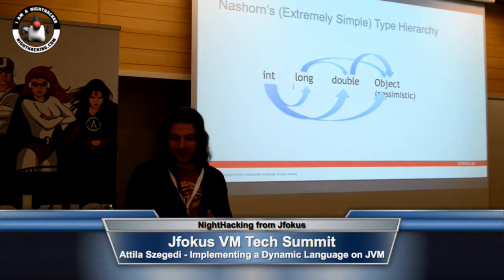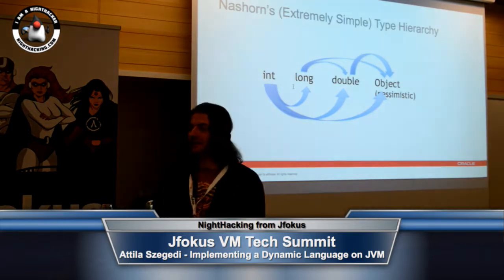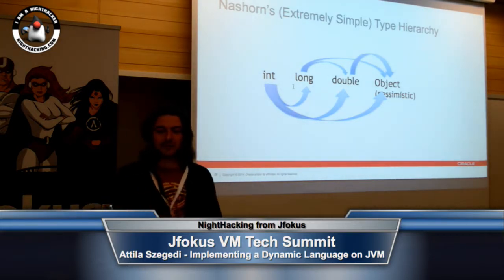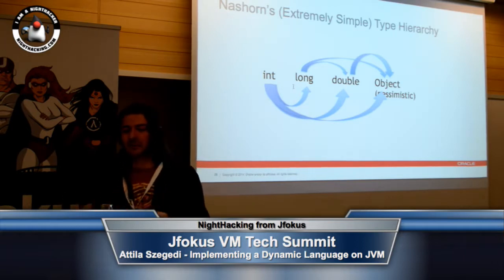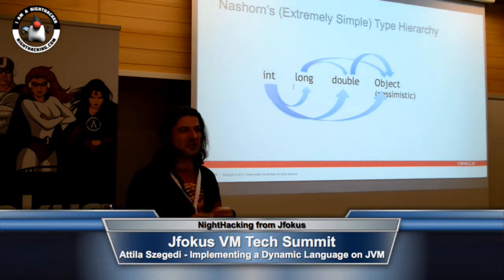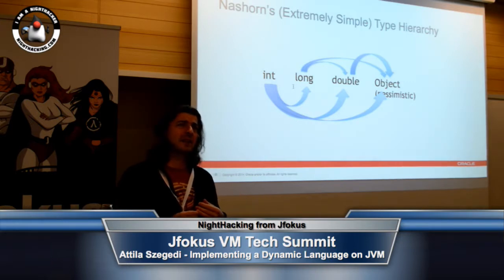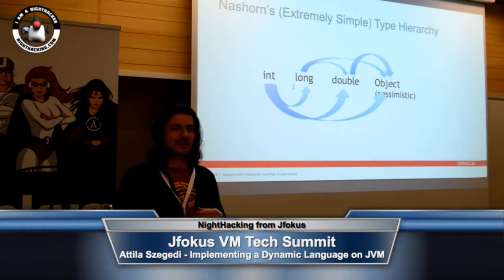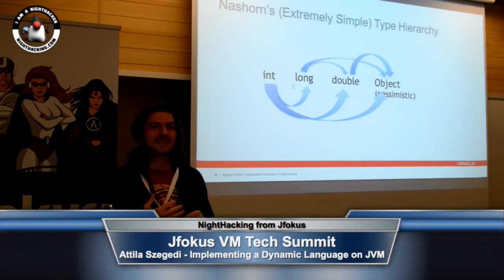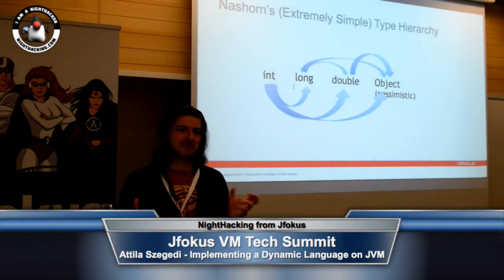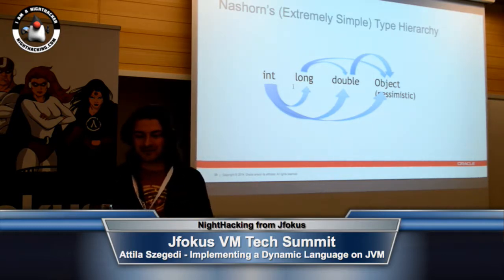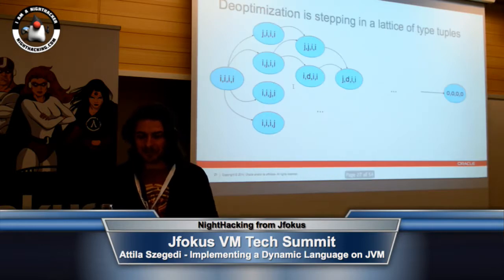For the optimization, we have an extremely simple type hierarchy. We promote from int to long to double to object. Some people actually tell us that we shouldn't really bother with 64-bit longs. I have a bug filed for Nashorn right now which is called 'Nashorn is too precise', because if you widen to 64-bit longs, then sometimes you get more precision than you can have in a 64-bit double if you are operating with those.